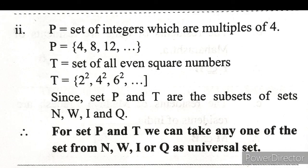The sub-question in question 6: Set P is integers that are multiples of 4, and set T is all even square numbers. The multiples of 4 and squares of even numbers are all natural numbers, and therefore also whole numbers, integers, and rational numbers. So for sets P and T, we can also take any one of N, W, I, or Q as the universal set.